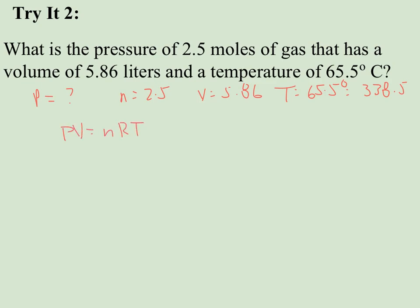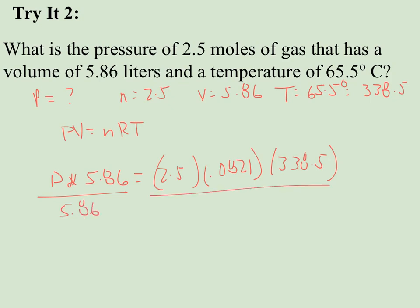I can just use my straight up ideal gas law. PV equals nRT. P is what I want. I have V at 5.86. n is 2.5. R is going to be 0.0821, because I'm still using atmospheres. Temperature is 338.5. So this one's going to be pretty easy to solve for. I just have to move the V over, divide both sides by the 5.86. And pressure is going to be equal to 11.9. And that is going to be in atmospheres.